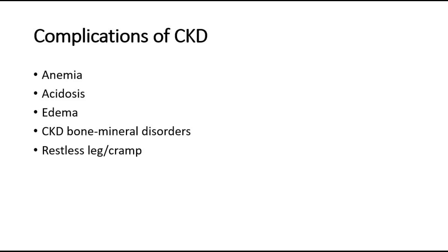The fourth complication is CKD bone mineral disorder. In CKD patients, the disease causes an increase in serum phosphate level and reduced hydroxylation of vitamin D by the kidney. We have to measure calcium, phosphate, and parathyroid hormone levels. Medications we can give include phosphate binders or vitamin D supplements. The fifth complication is restless leg syndrome or cramps.